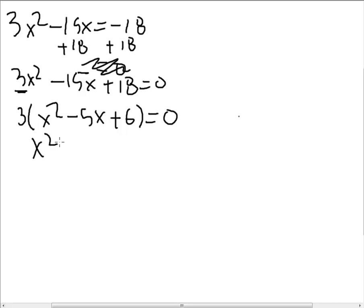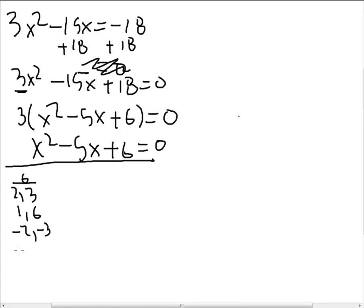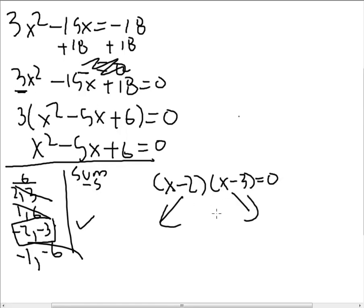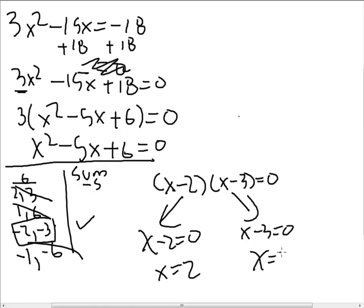We can say 3 times x squared minus 5x plus 6 equals 0. Dividing both sides by 3 gives a much more doable quadratic equation. We're looking for the factors of c, which is 6: 2 and 3, 1 and 6, negative 2 and negative 3, negative 1 and negative 6. They must sum to negative 5. Negative 2 plus negative 3 equals negative 5 — that's our ticket. We rewrite as x minus 2 times x minus 3 equals 0, giving x equals 2 or x equals 3. Our solutions are 2, 0 and 3, 0.